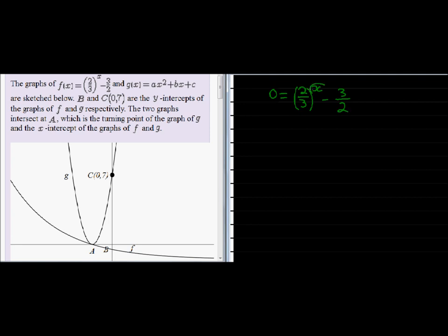So we should solve for x. Let's just first solve for the base. Let's get the base and exponent on their own, so we add 3 over 2 on both sides. So we get 3 over 2 is equal to 2 over 3 to the power of x.